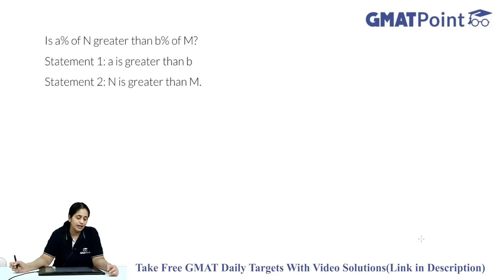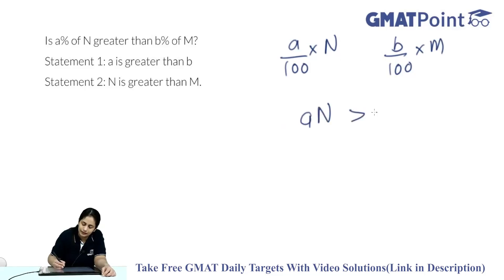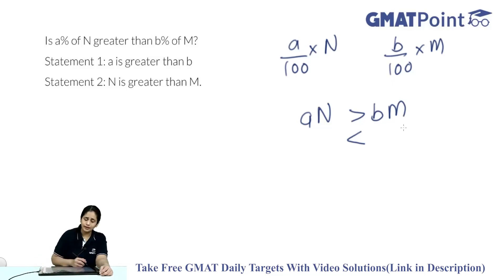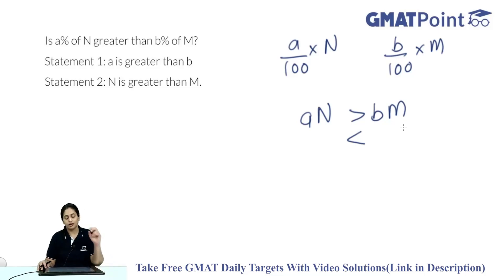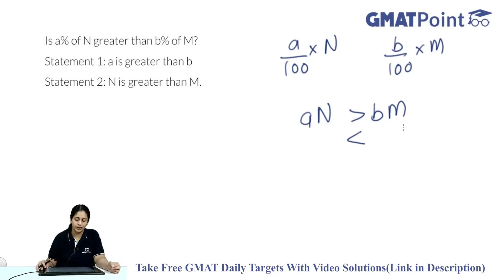Now let's look at the following question: is a percent of n greater than b percent of m? A percent of n is (a/100) × n, and b percent of m is (b/100) × m. We need to know whether the product an is greater than or less than the product bm. Statement 1 says a is greater than b — but even if a > b, an need not be greater than bm without knowing n. For example, 80% of 100 is 80, but 30% of 1000 is 300, so an < bm in that case. So statement 1 alone is insufficient.